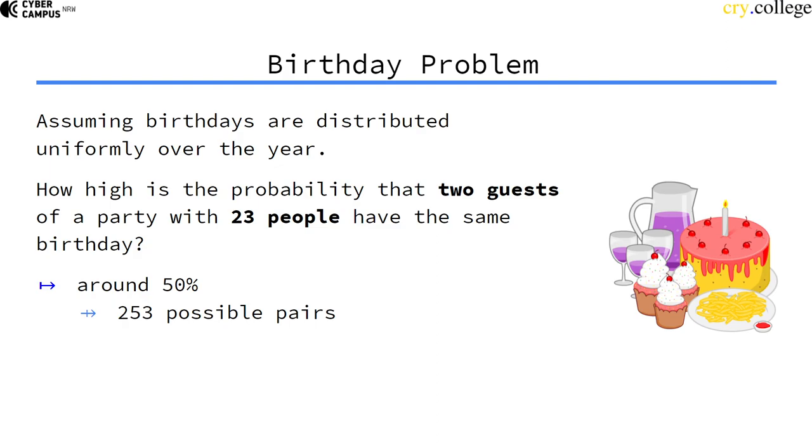Given that the year has only 365 days, now we understand why this probability can be so high - because we have a lot of pairs to compare.